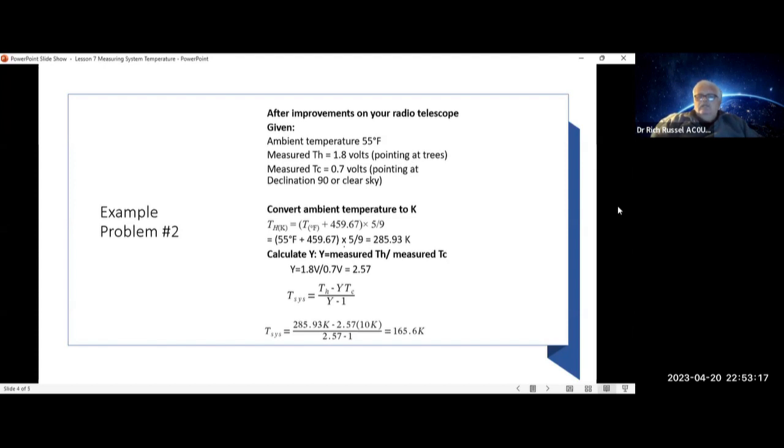Convert your T-Hot to degrees Kelvin, calculate your y-value, and you find out your T-SYS is equal to 165.6 Kelvin. This is a significant improvement from the last measurement.